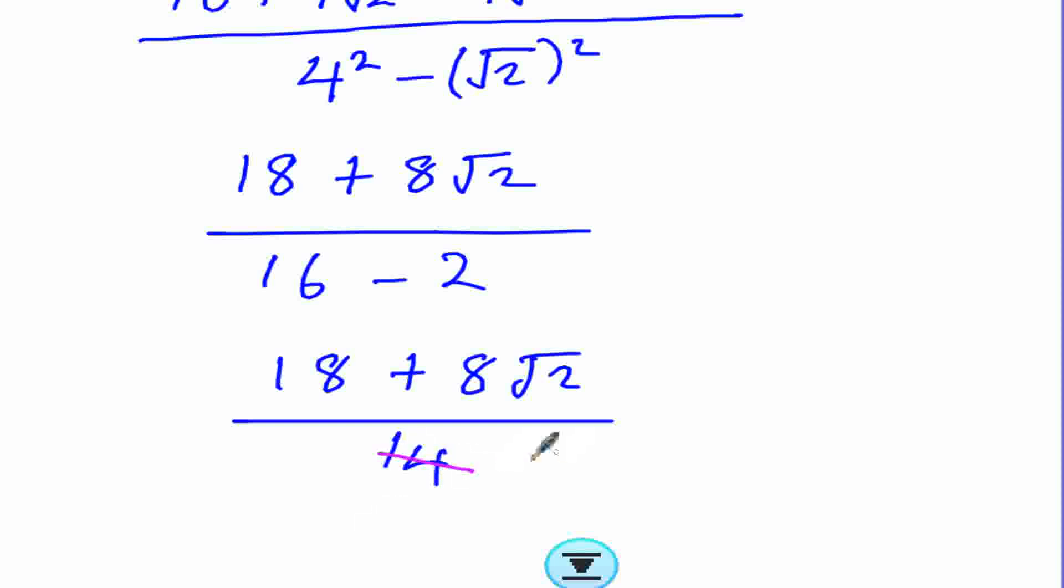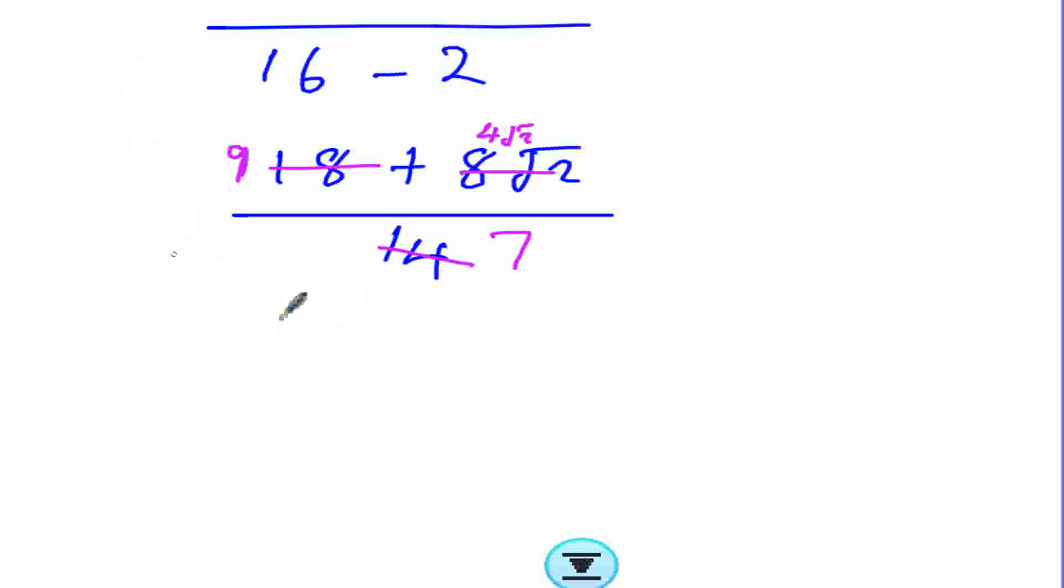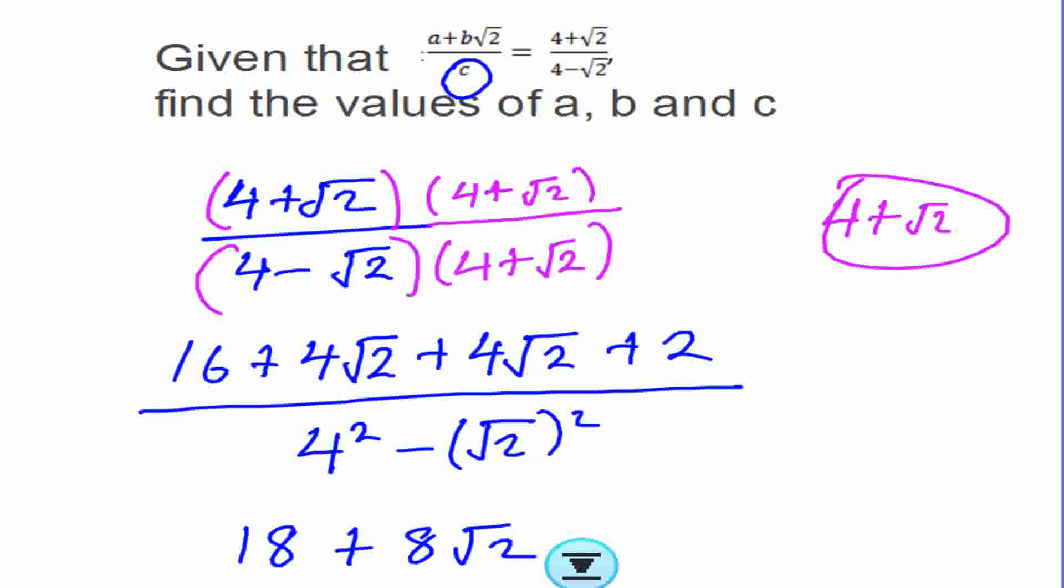If I reduce this by 2, I get 7. I reduce this by 2, I get 9, and I reduce this by 2, I will get 4 root 2. So my final answer will be 9 plus 4 root 2 over 7. But remember the question is telling us to find the value of a, b, and c.